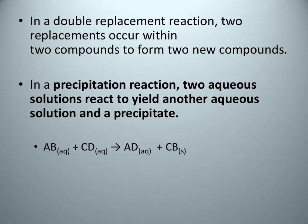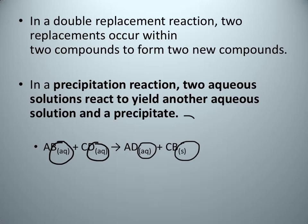Recall that in a double replacement reaction, two compounds react to produce two new compounds. A precipitation reaction is a specific kind of double replacement reaction, and this is what we will be looking at in this video. Our reactants are going to be two aqueous solutions — notice how they're labeled AQ — and our products are going to be another aqueous solution and our precipitate, labeled as a solid.